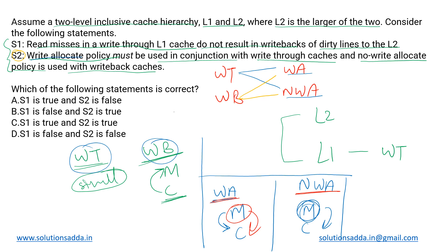Coming to statement S1: it talks about read misses. If there is a read miss in this write-through L1 cache, that will result in a read-allocate. We are talking about write policies here, but a read miss causes a read-allocate, and there will be no write-back in this case.